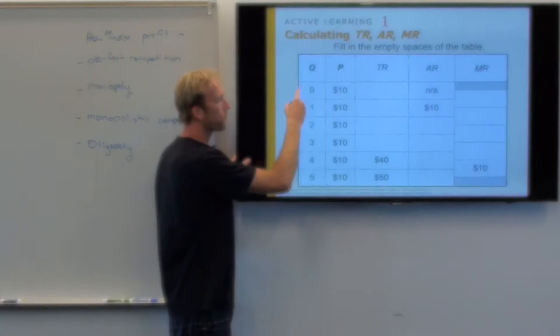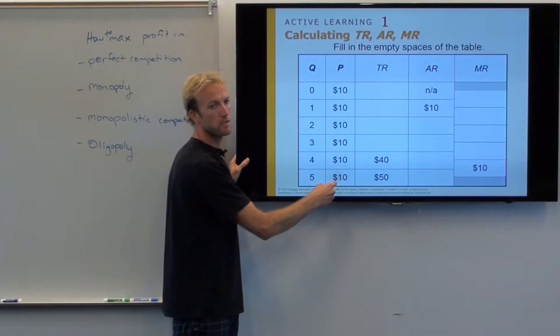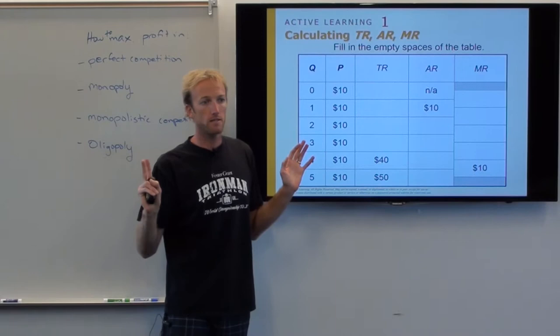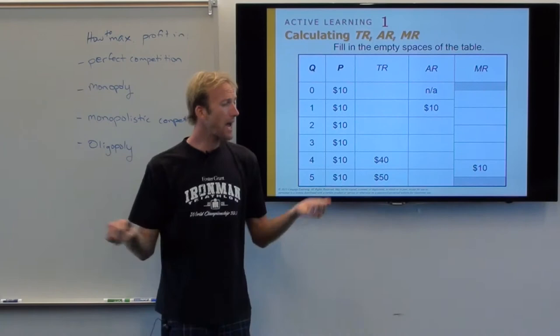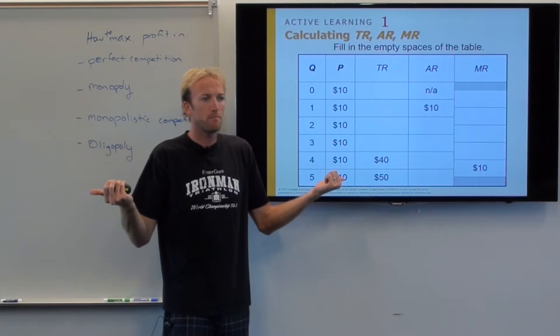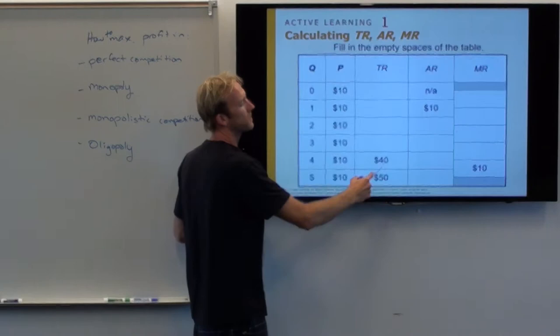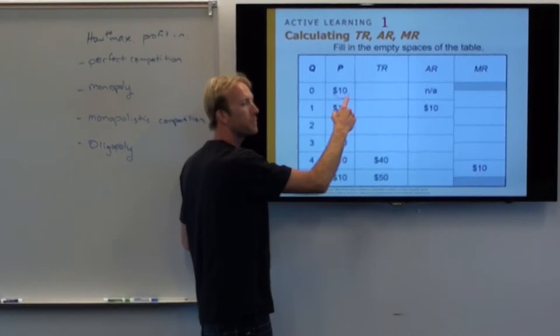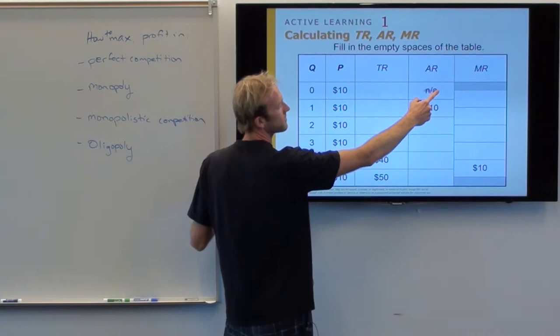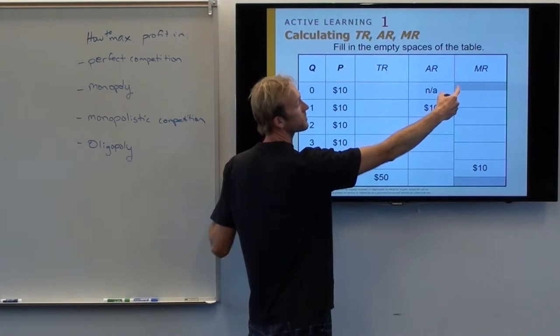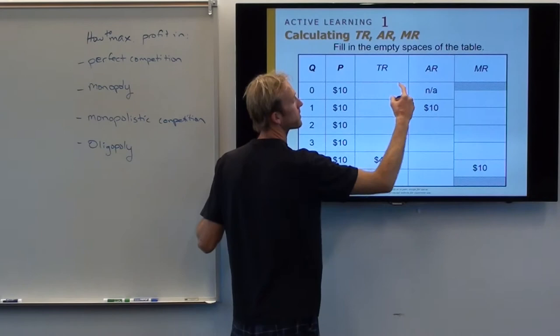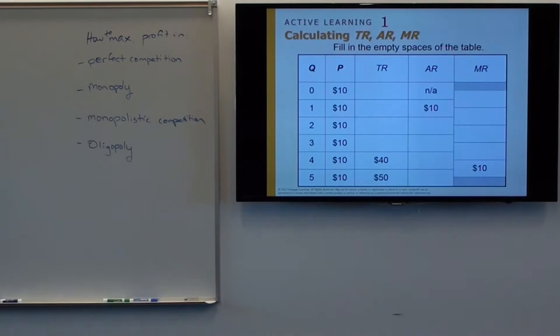I don't get to make the price because I'm the seller in a competitive market — there are so many other sellers selling the exact same thing. If I try to change the price even one cent more, the buyers just go somewhere else. So let's fill in total revenue: it's price times quantity, so $0, $10, $20, $30, $40, $50. Average revenue is total revenue divided by Q, which always equals $10 — the market price. Marginal revenue is the change in total revenue, also $10 each time.